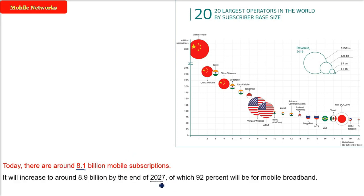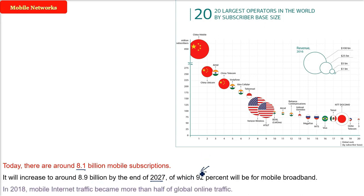In 2027, it is assumed subscriptions will go up to 8.9 billion, and 92% will be for mobile broadband. Back in 2018, the mobile internet traffic became more than half of global online traffic. This is the present scenario of mobile networks.